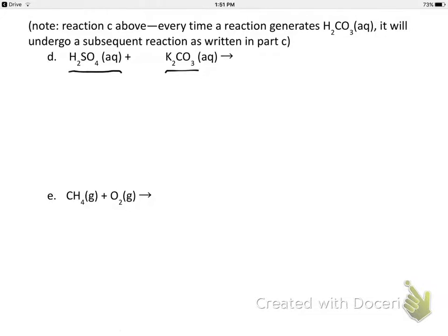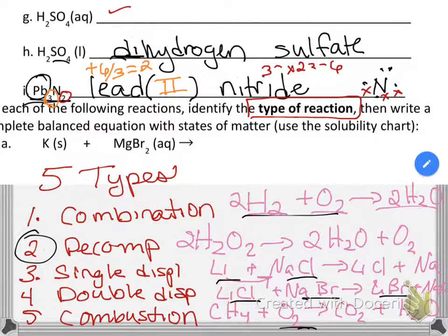This is not going to be a single displacement, so let's go back and look at our types of reactions here. It's not going to be a single displacement because that has a metal, an element in it. It's not going to be a decomposition because it starts off with one thing and produces many things. It might be a combination or it might be a double displacement.